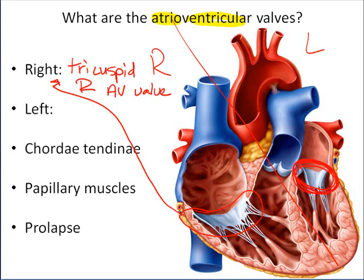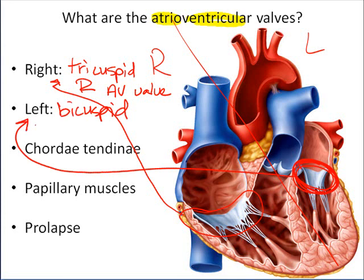On the left side, there is the same type of valve separating the atrium from the ventricle. Because it only has two cusps, we call it the bicuspid valve. It's also called the mitral valve — because people thought it resembled a bishop's mitre hat — and it can also be called the left AV valve. It has three alternate names and you need to know all three, because different people will refer to it by a different name.